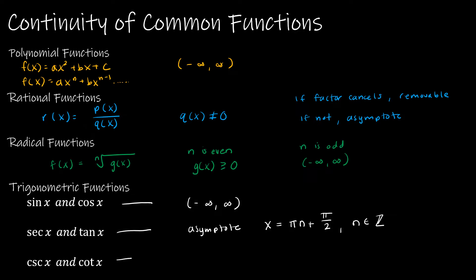Whereas cosecant and cotangent also have asymptotes, and asymptotes are considered not part of the domain, at x = πn. Again, where n is an element of the integers. So basically multiples of π: π, 2π, 3π, 4π, and so on.